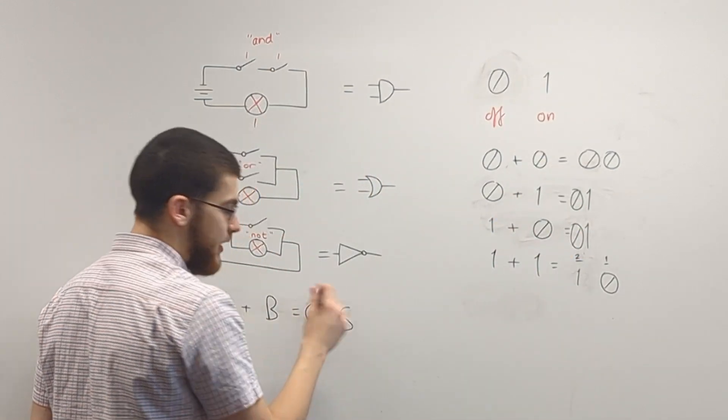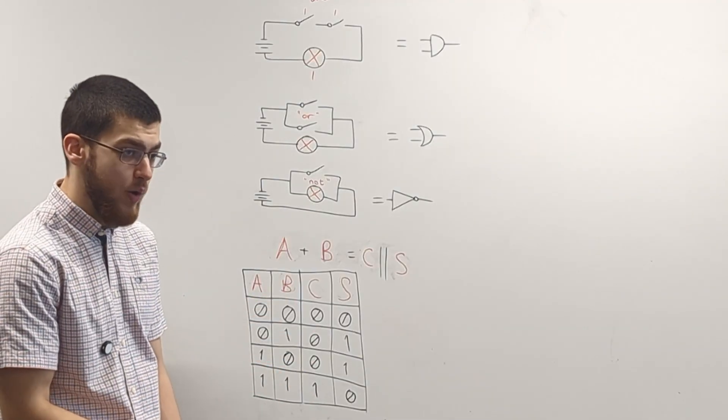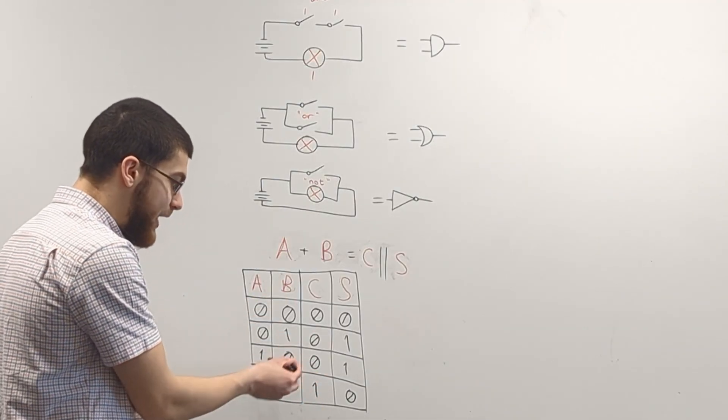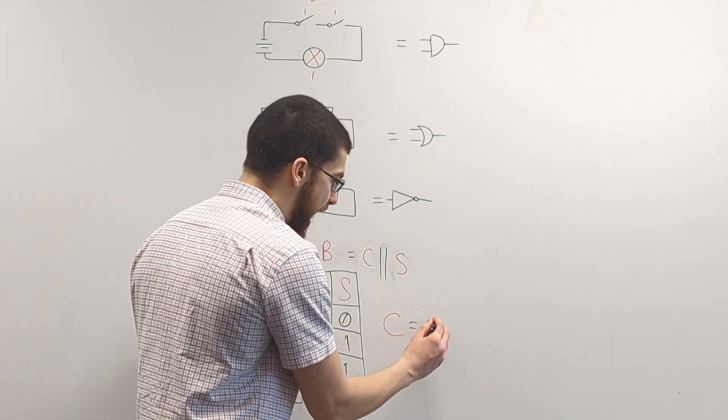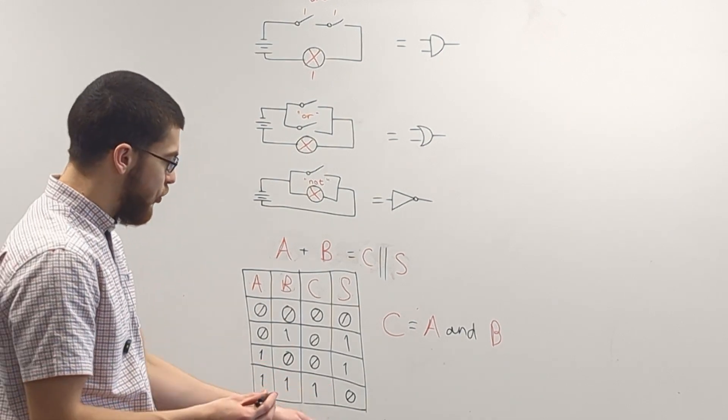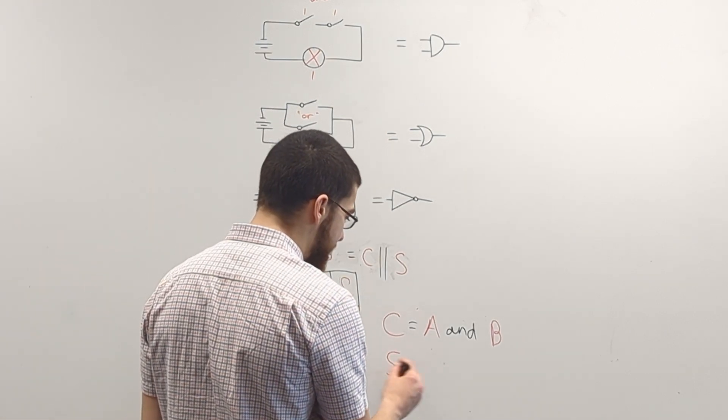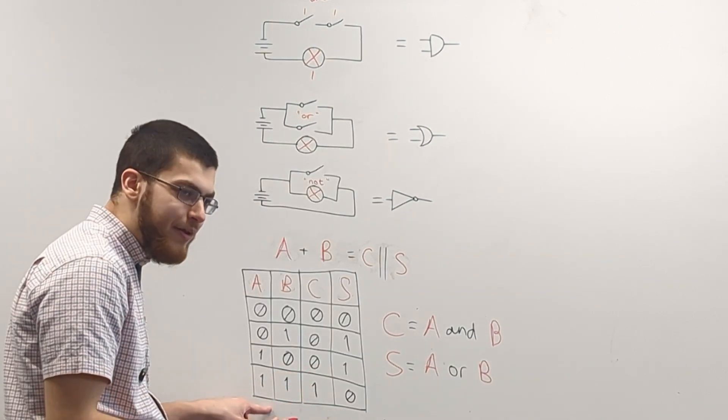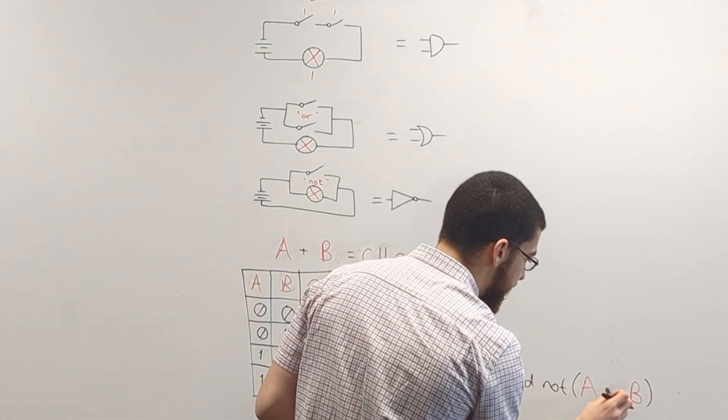So these two are being concatenated, meaning they're joined together. If you put all these in a table, you can easily see what's going on here. C is on when A and B is on. So C is just A and B. But S is a little bit trickier, because S is on when A or B is on. So S equals A or B. But not when A and B is on. So we need an and, not A and B.